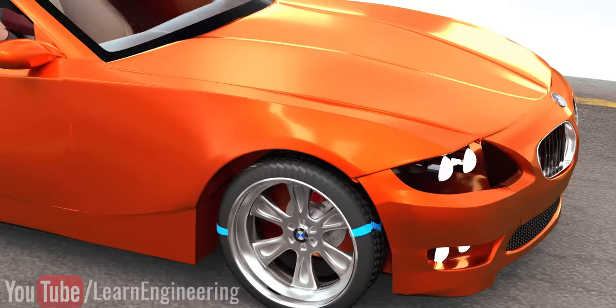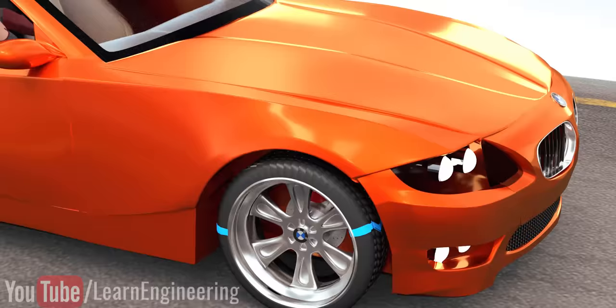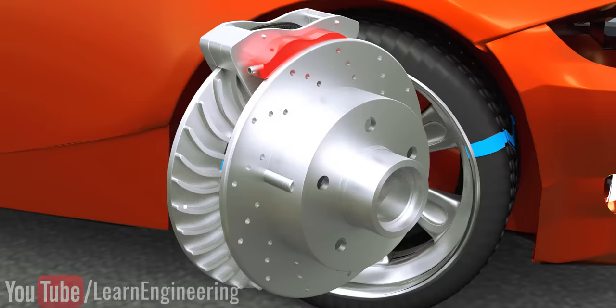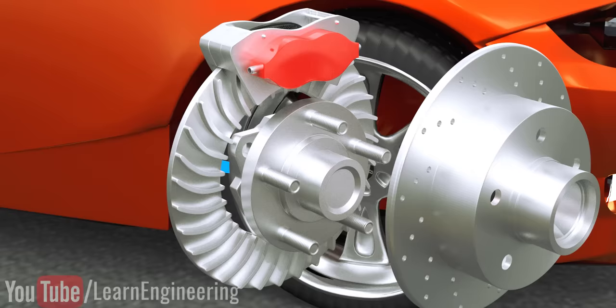In cars, you need a much higher air circulation and surface area for temperature control. Due to this reason, the discs of cars have veins inside them. The veins will help to throw the air radially outward. The holes around the disc further improve the air circulation.